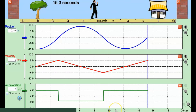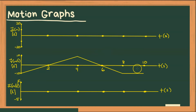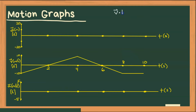Now that we've seen all of this, let's try and analyze our own graphs to see if we can draw them ourselves. In this question, we're given a velocity-time graph and we need to draw the corresponding position-time and acceleration-time graphs. To go from a VT graph to an AT graph, we need to find the slope — the same as when we have a position-time graph and want to find velocity.